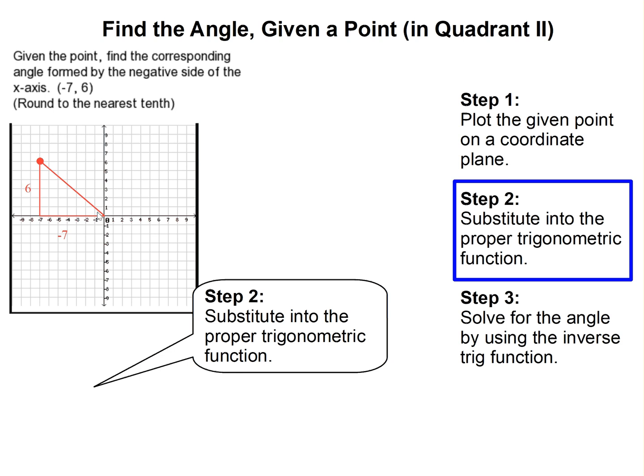So that means they gave us the opposite and they gave us the adjacent to this angle here, according to my triangle. So that means we're going to have to use the tangent. Right, so I'm going to take our values. We've got our opposite over our adjacent right here, so it's going to be 6 over negative 7.